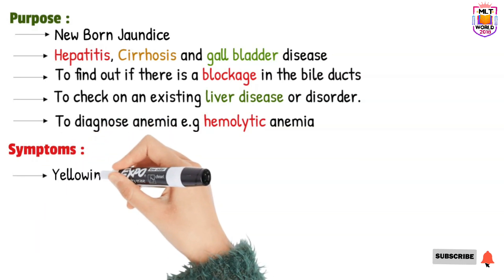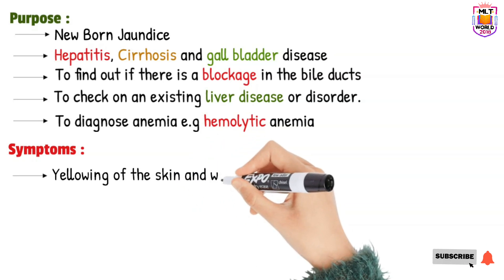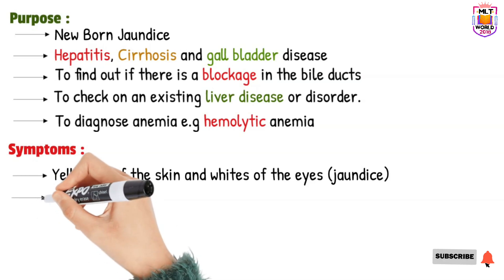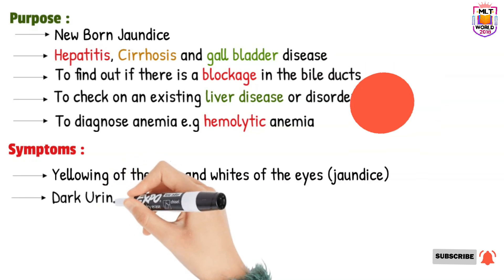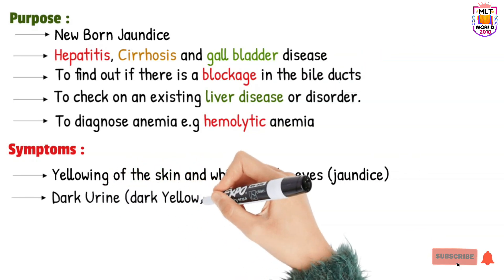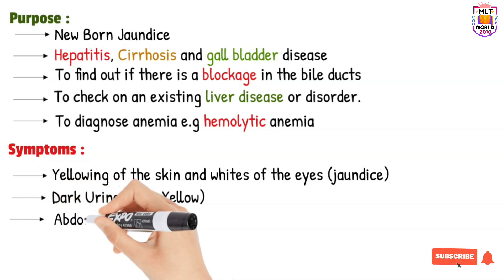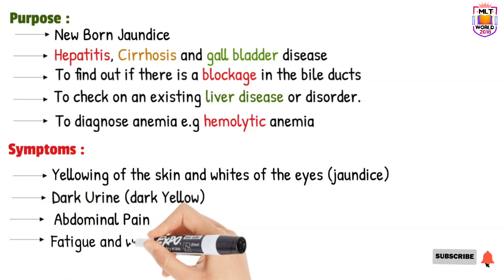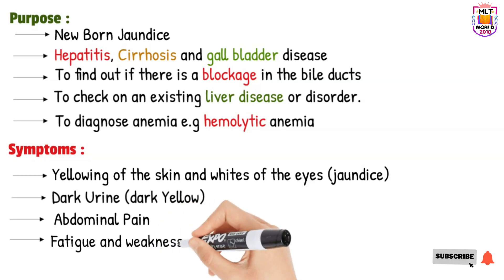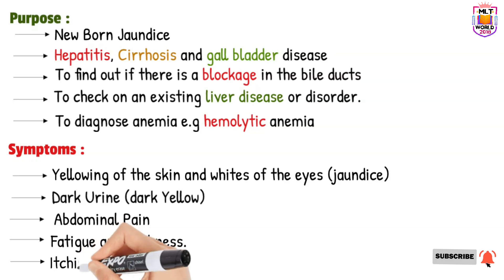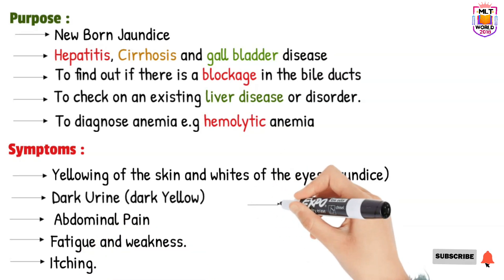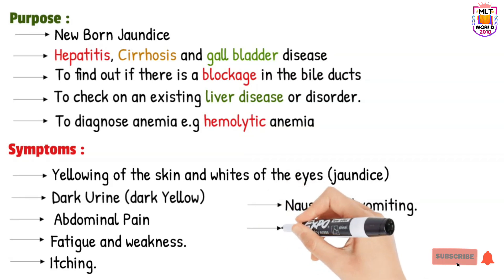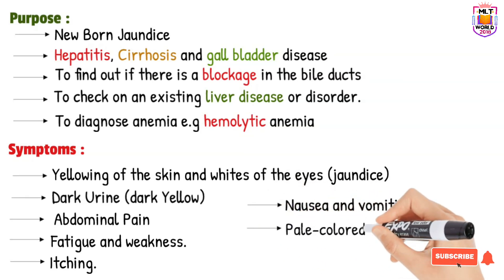The symptoms that lead a doctor to order a bilirubin test include: jaundice (yellowish color of the skin and whites of the eyes), fatigue, dark urine (dark yellow color), abdominal pain, weakness, itching, nausea, vomiting, and pale-colored stool.